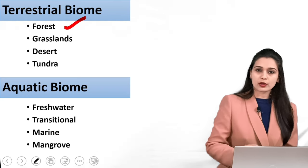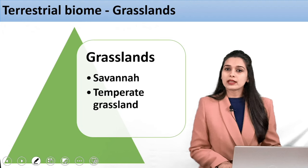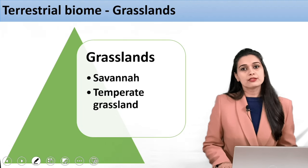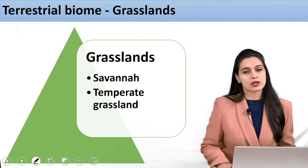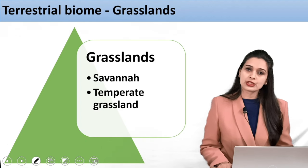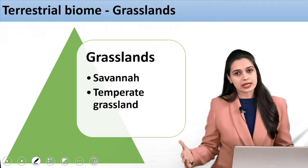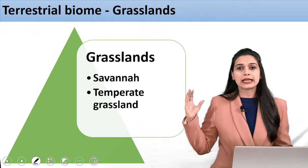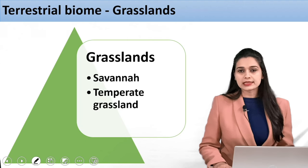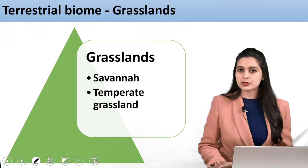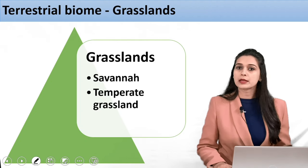We have done forest, now we are moving towards grasslands. Just like in forest the dominant vegetation is trees, in grasslands the dominant vegetation will be grasses. If you see a lot of grasses, that means it is a grassland. If you want to study grasslands on the globe, there are two major types: one is the savannas, also known as tropical grasslands, and the other is the temperate grassland.